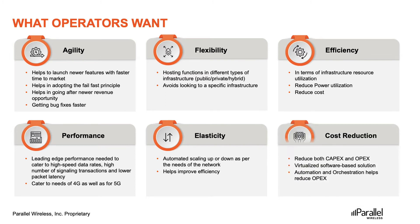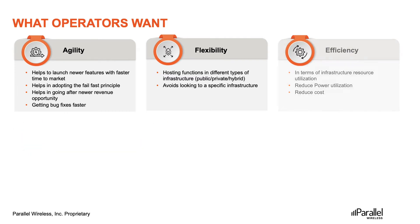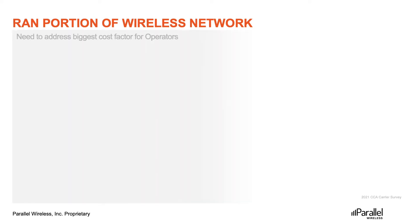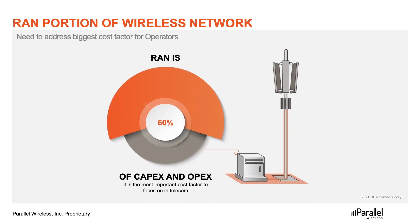Cost reduction in both CAPEX and OPEX is also an important factor. With software-based virtualization solutions, CAPEX is significantly reduced. Automation and orchestration will further help significantly in saving OPEX. RAN is one of the biggest cost factors for operators and also one of the slowest to change when introducing newer features or services. It is thus obvious to go after the RAN solution to optimize cost and make it more agile.